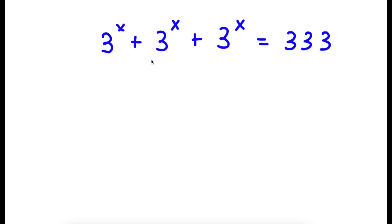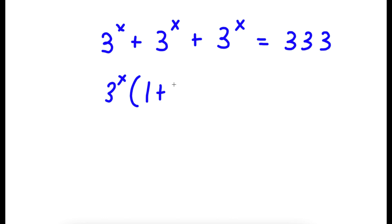All right, so in this problem, I have 3 to the power of x plus 3 to the power of x plus 3 to the power of x is equal to 333. So to solve this, I'm going to first start by factoring out 3 to the power of x. So our 3 to the power of x times 1 plus 1 plus 1 is equal to 333.